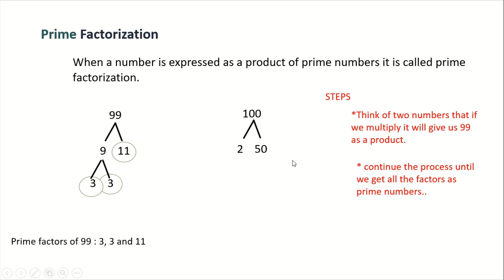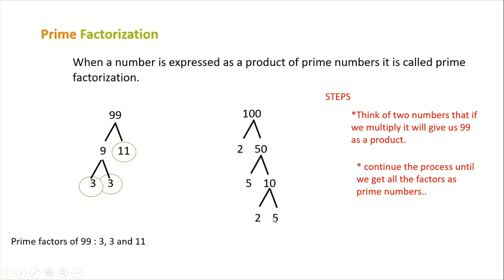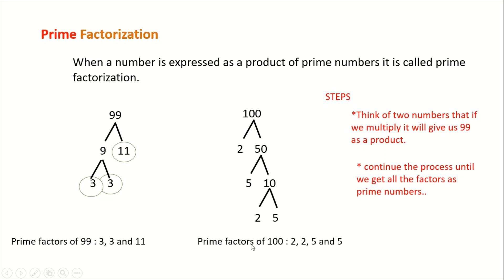We can use 5 times 10 as the factors of 50. Now 5 is already a prime number, but 10 is still composite. So we find the factors of 10: that gives us 2 times 5. Now 2 is prime and 5 is prime. So we have 2, 5, 2, and 5 — all prime numbers. Therefore, the prime factors of 100 are 2, 2, 5, and 5.